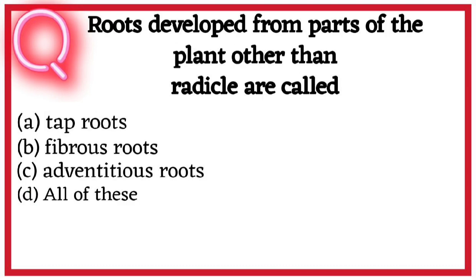Second question. Roots developed from parts of the plant other than radicle are called A. Tap roots, B. Fibrous roots, C. Adventitious roots, D. All of these. So correct answer hai option C. Adventitious roots.